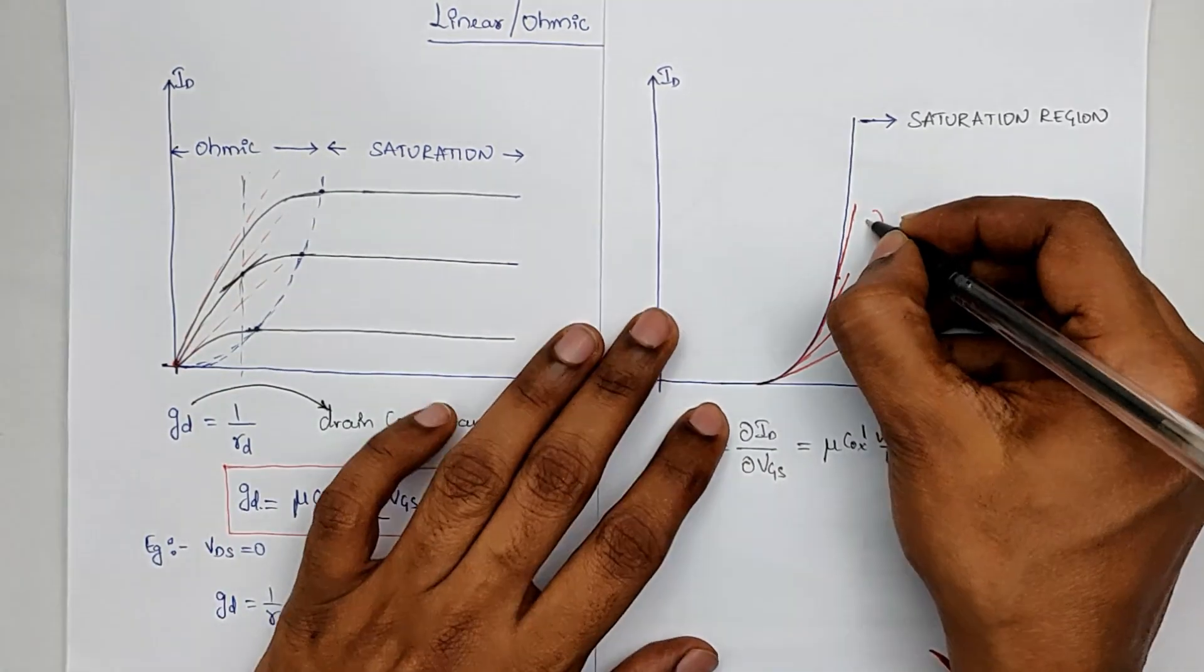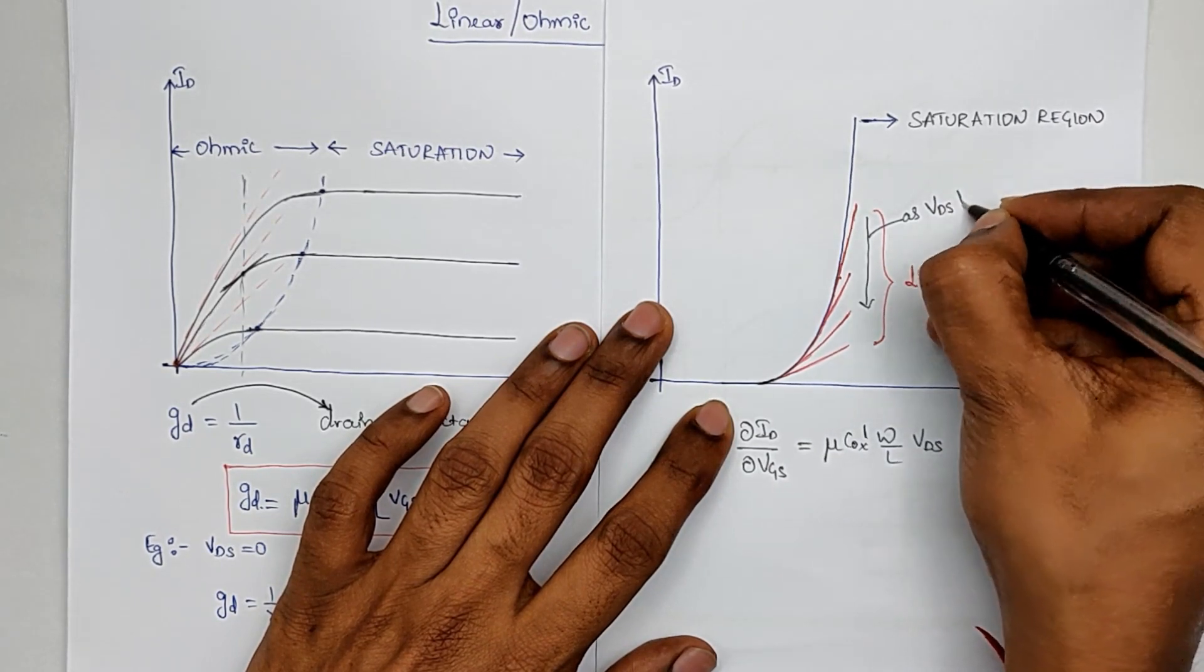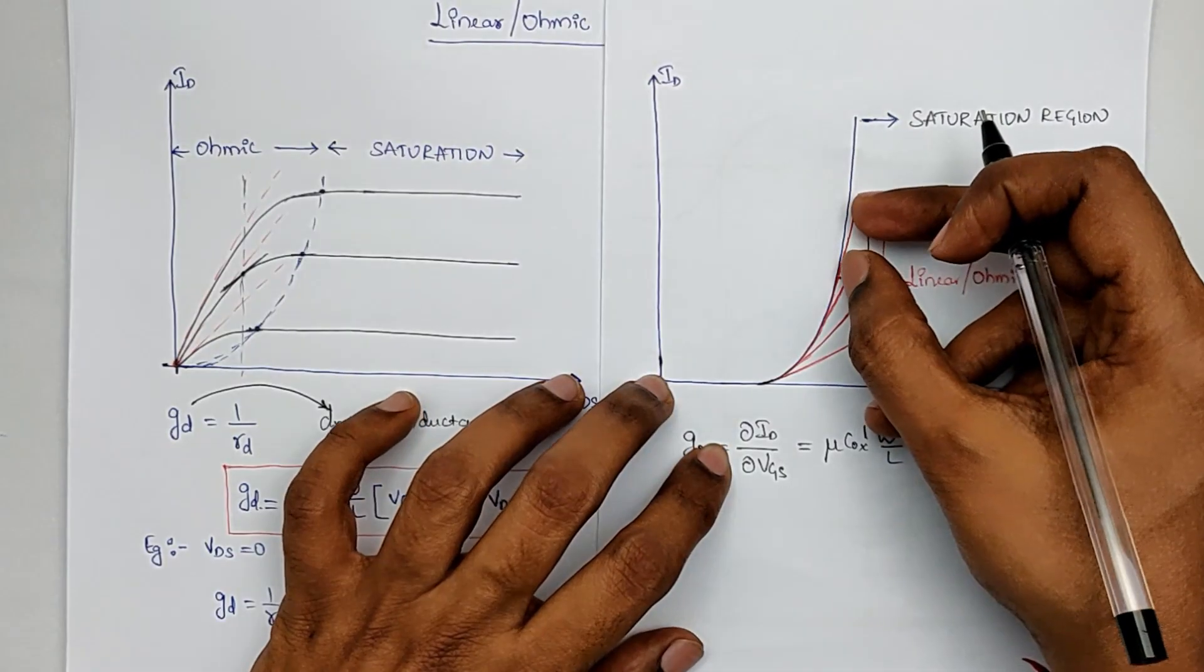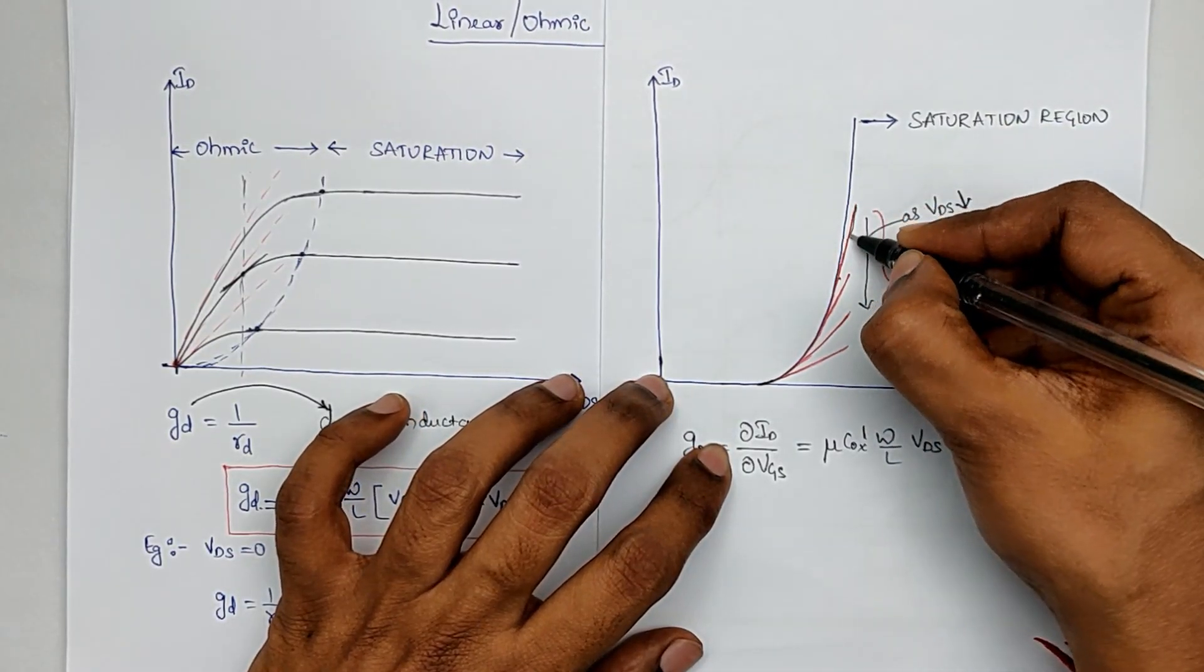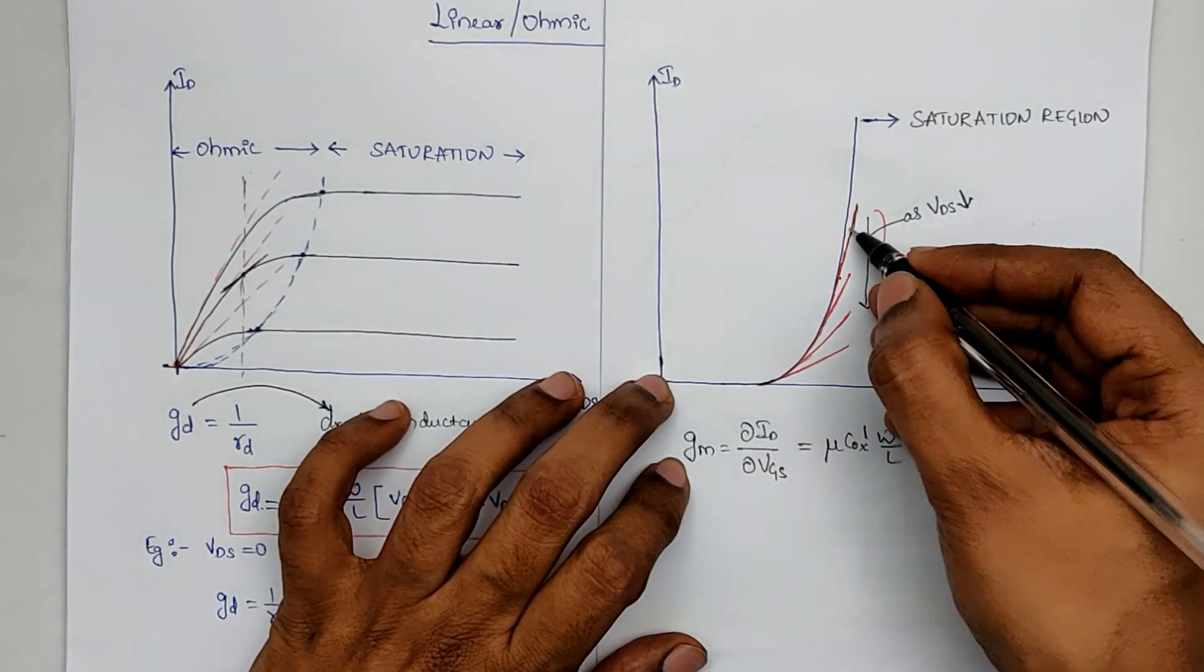So let me write this down here. This curve keeps moving down as VDS is decreasing. And of course, within this region, if you see, this will be linear. This will be linear. Hence, the GM will be constant there.